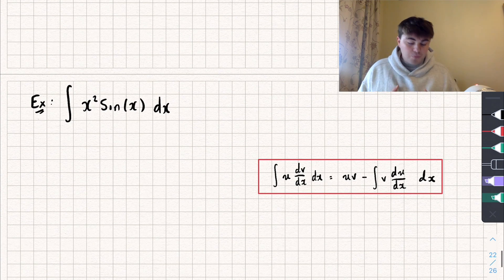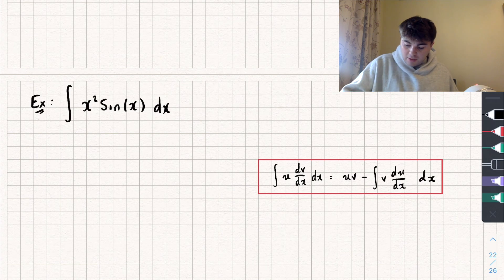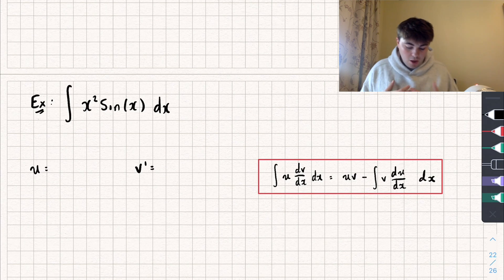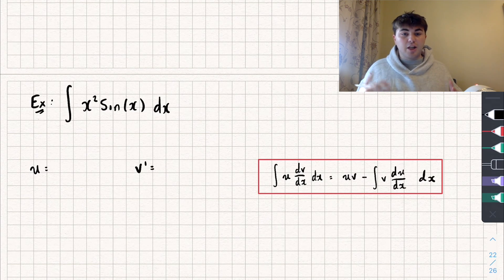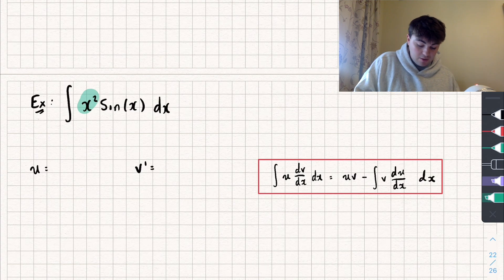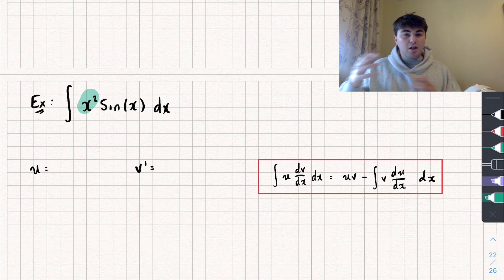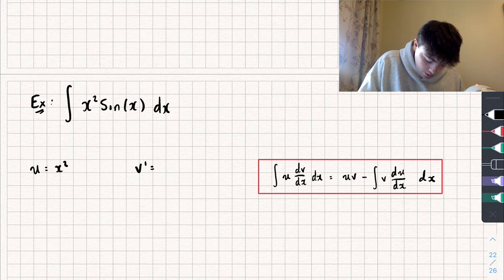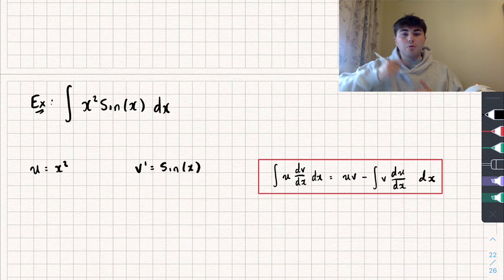Let's look at another example — this one is a bit more tricky because we're going to have to use integration by parts twice. So let's start off with our u and v'. Usually I don't like to differentiate trig, because the other term — in this case x squared — becomes a lot easier to integrate later when we differentiate it. For this example I'm going to select u to be x squared and v' to be sine of x, and when we get to the second iteration of the integration you'll see why that's easier.